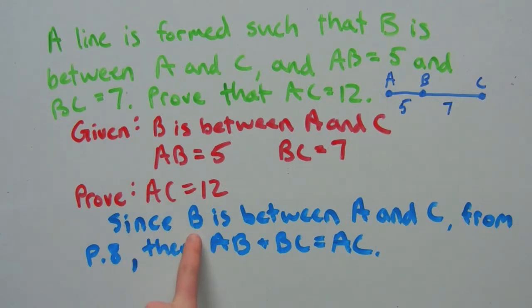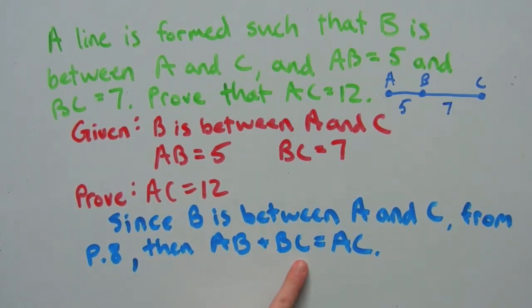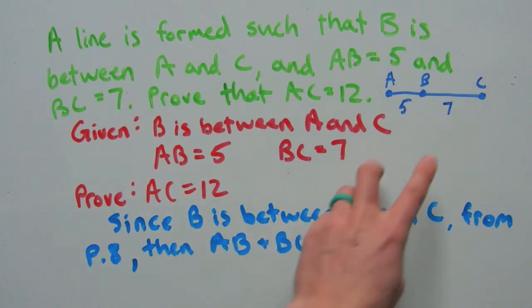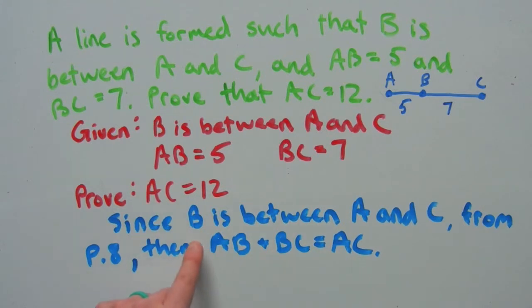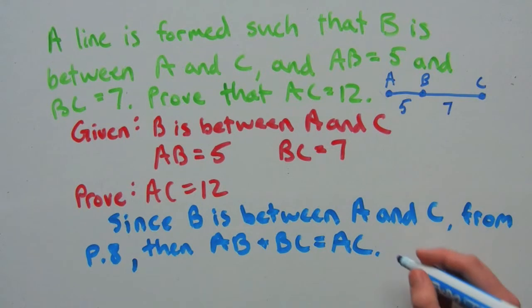Since our given information is that B is between A and C, from P8 — the segment addition postulate — we have AB plus BC equals AC. The postulate states that if B is between A and C, then AB plus BC equals AC. Since a postulate is accepted as true, it is safe to assume that AB plus BC equals AC in this problem. Remember, what we're trying to prove is that AC equals 12, and we're given the measures of AB and BC.